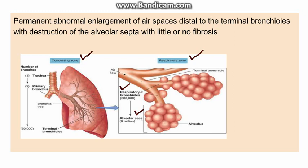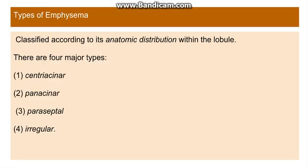Emphysema is defined as permanent and abnormal enlargement of the air spaces distal to the terminal bronchioles. This occurs with destruction of the alveolar septa, but there is little or no fibrosis.